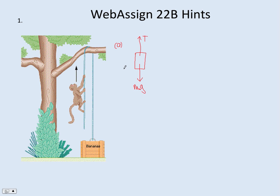How much tension does he need to produce in the rope to lift the bananas? If you look at the bananas, mass of the bananas times g would be the weight, and tension acts upward. To lift the bananas, we need a force greater than the weight — just a tiny bit greater. The limit would be setting the tension equal to the weight of the bananas. The monkey is accelerating up, so for part A, sum of the forces equals mA. The tension has to equal the weight of the bananas, the weight is the weight of the monkey, and the mass is the mass of the monkey.